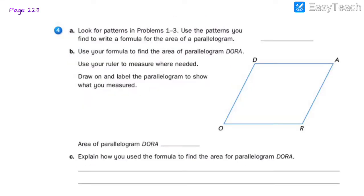Number four: look for patterns in problems one through three and use them to write a formula for the area of a parallelogram. Then use your formula to find the area of parallelogram DORA, using your ruler to measure where needed, drawing and labeling the parallelogram to show what you measured. We are going to do this one as a small group when you come back to talk to your teacher, so go ahead and put a little star on number four and we'll come back to it.